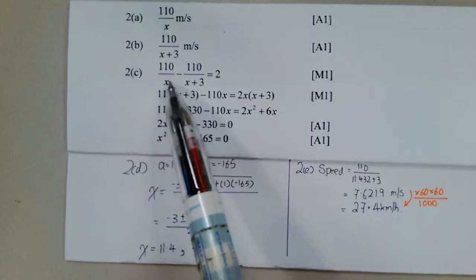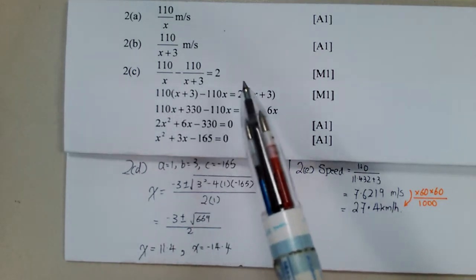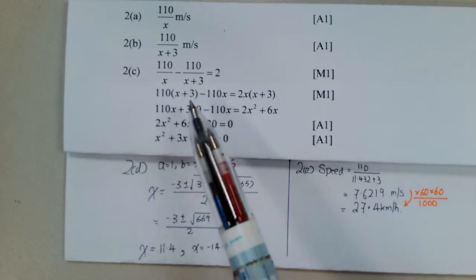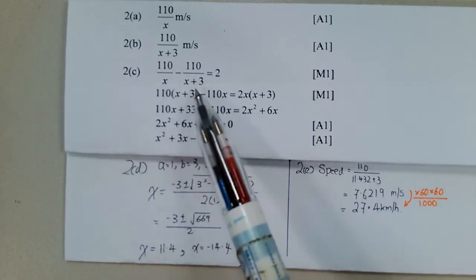So we take the original speed minus the new speed. We equate it to 2. The difference is 2 meters per second. Multiplying both sides of the equation by x, x plus 3.